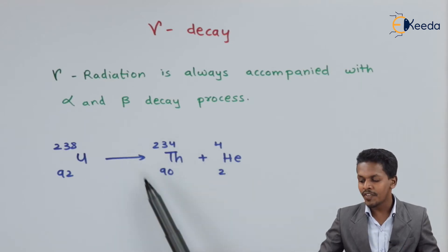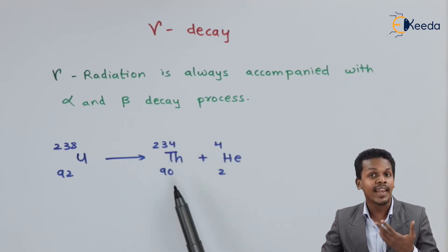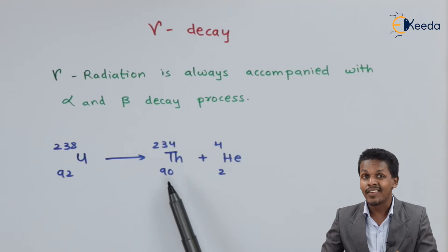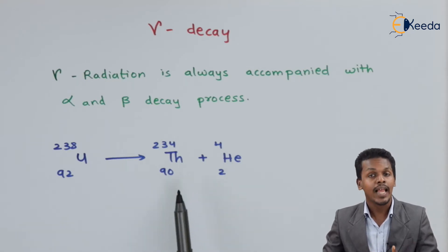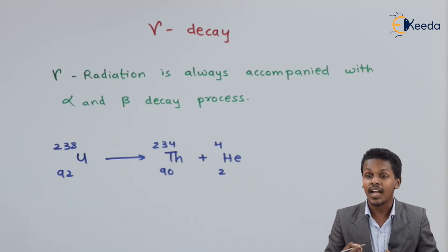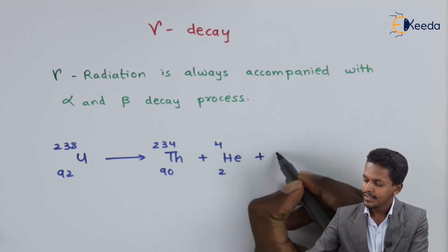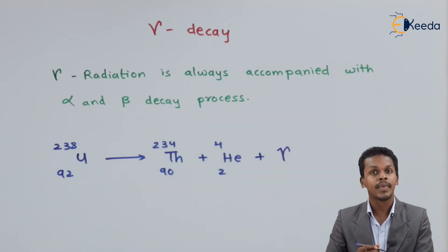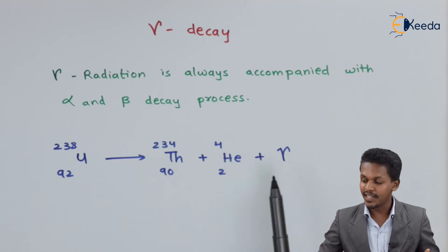The thorium which has been produced is in an excited state. When it de-excites, it will emit energy in the form of gamma rays. This is gamma decay.